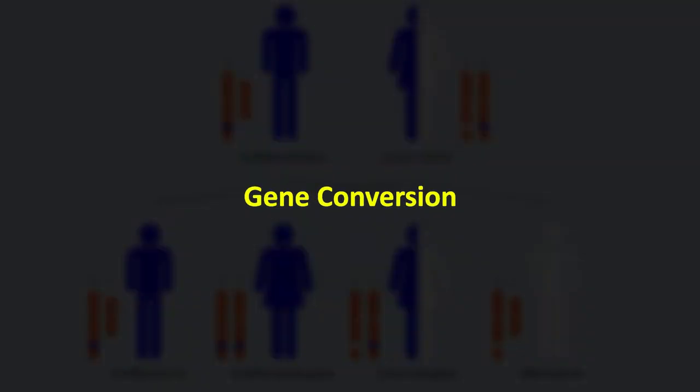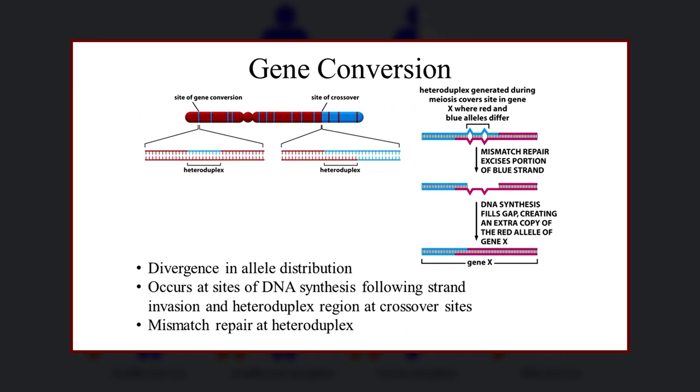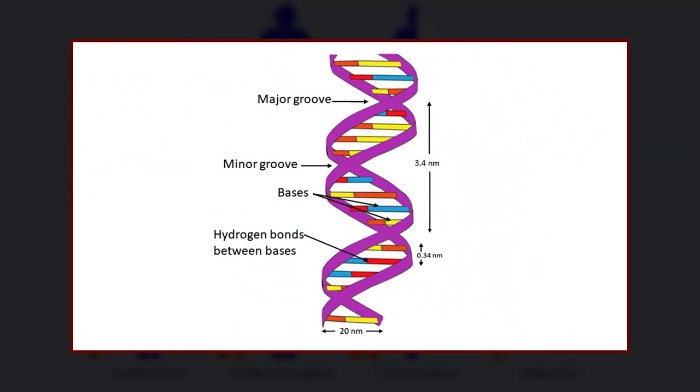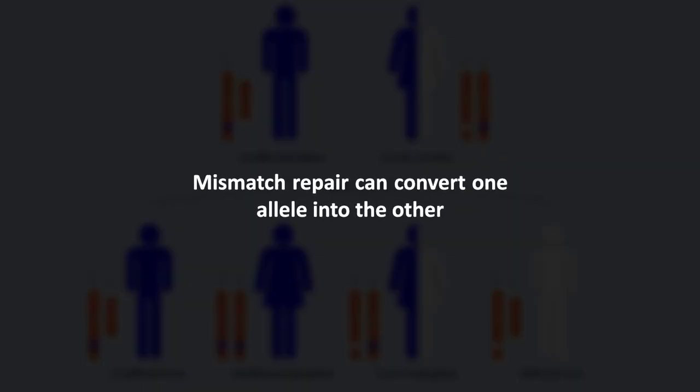Another major form of non-Mendelian inheritance is gene conversion. It arises during DNA repair via DNA recombination, by which a piece of DNA sequence information is transferred from one DNA helix (which remains unchanged) to another DNA helix whose sequence is altered. This may occur as a mismatch repair between strands of DNA derived from different parents, thus converting one allele into another. This phenomenon can be detected through non-Mendelian offspring ratios and is frequently observed in fungal crosses.